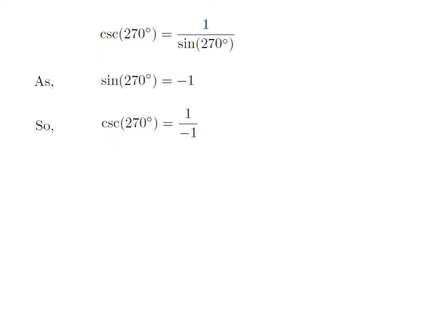Let us apply the above identity in the expression for cosecant of 270 degrees. So, cosecant of 270 degrees is equal to 1 upon minus 1.